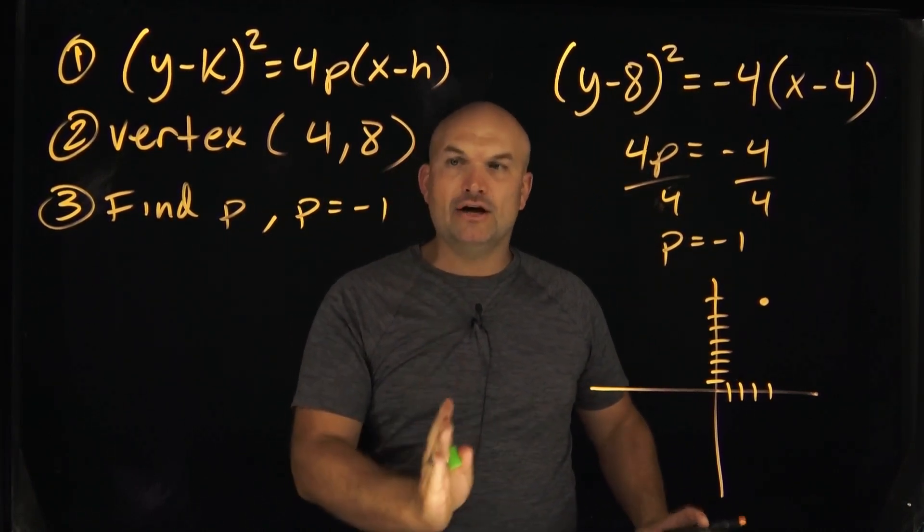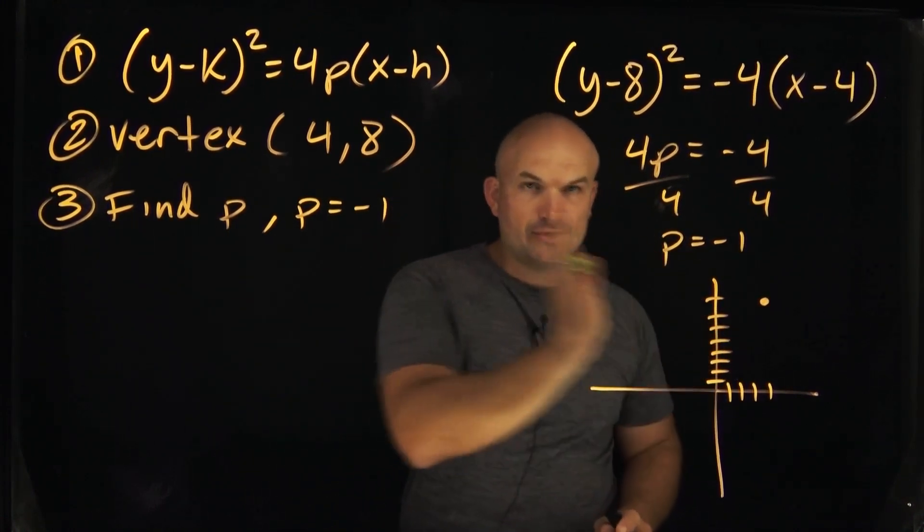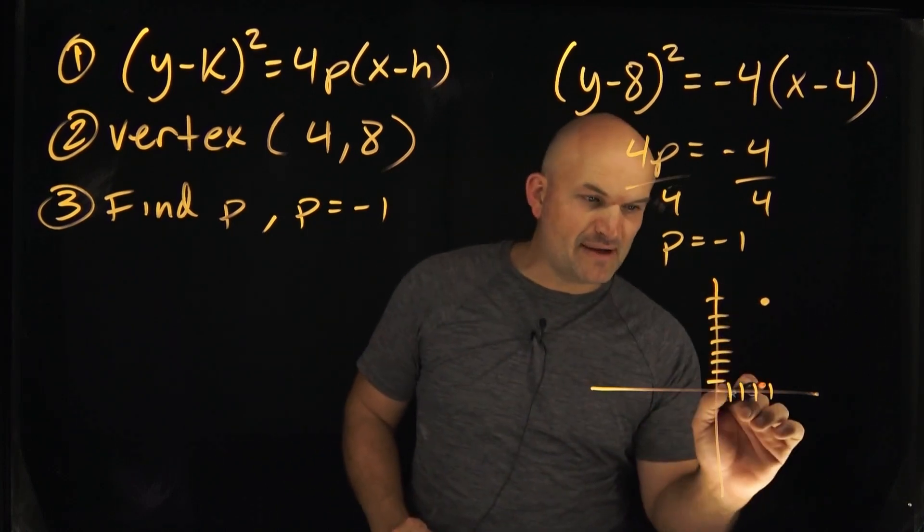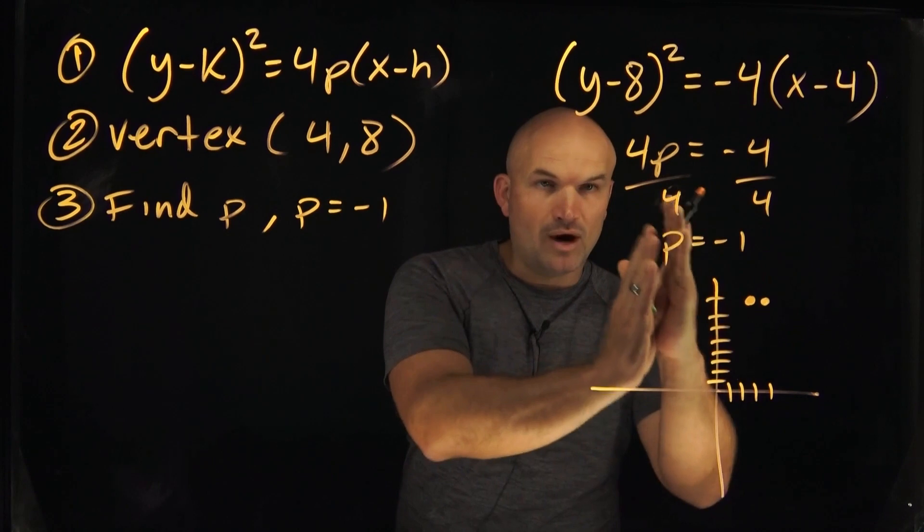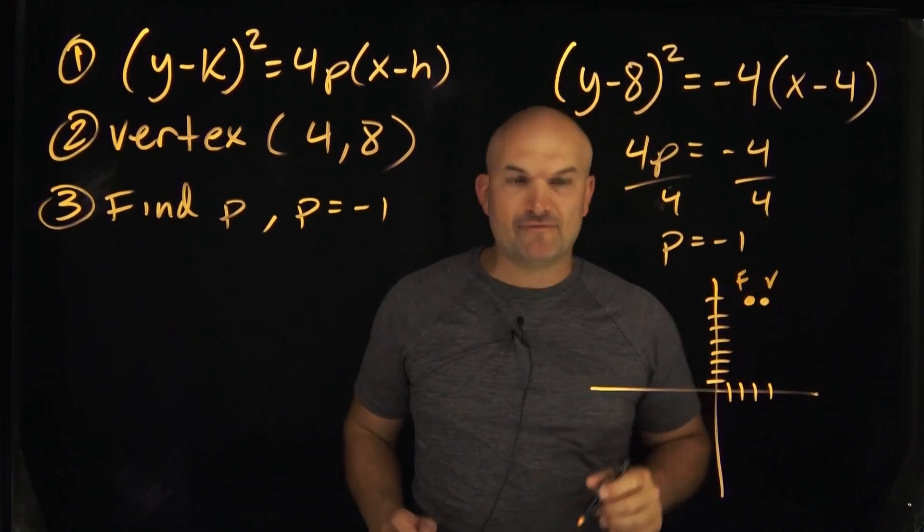Now, when p is negative, what that's telling you is that's telling you the direction. So the distance from our vertex to our focus is 1, but in the negative direction. So therefore, if I'm at 4, my focus here is going to be to the left, because it's a 1, but it's in the negative direction. So that is going to be my focus, that is going to be my vertex.